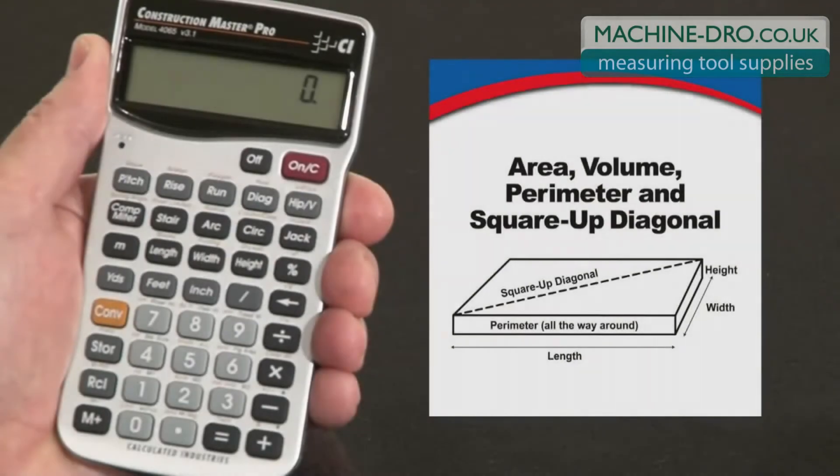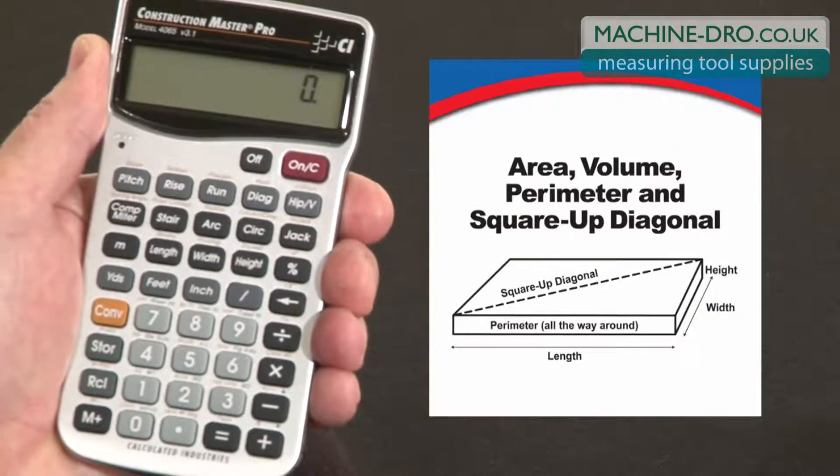Now let me show you how to calculate area, volume, perimeter, and square up diagonals using the length, width, and height key.